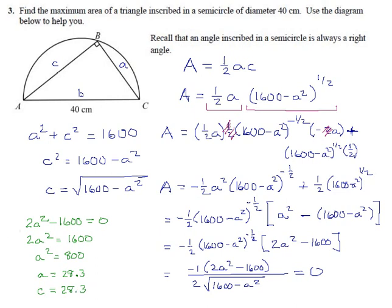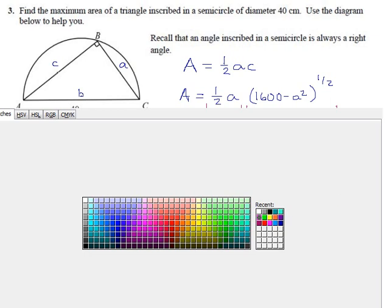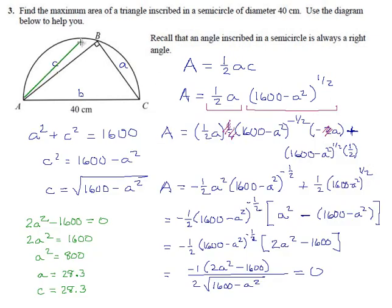So our optimal triangle, it turns out, is an isosceles triangle with its point dead center. You might remember from previous examples I said that generally your optimal shapes are balanced shapes, ones that have symmetry in them, and it happened again here. The triangle that covers the most area is one where the two sides are of equal length and this point is centered in the circle.